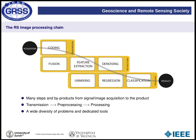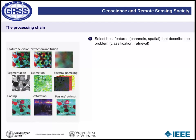Let's go through the remote sensing image processing chain. Going from acquisition to the final product involves a series of steps: from the satellite stages through data transmission down to the ground, then pre-processing to produce the most usable and discriminative bands or features, and then real processing to generate the product itself. We will go through nine steps in this chain.